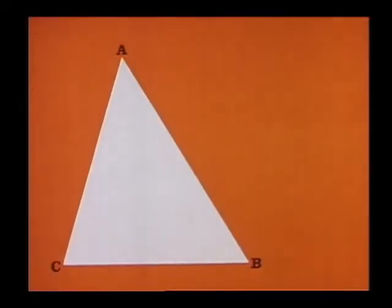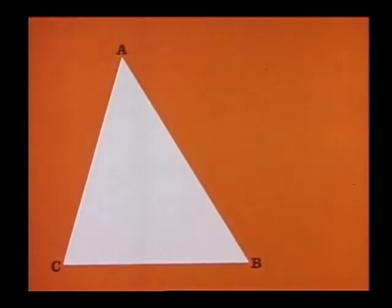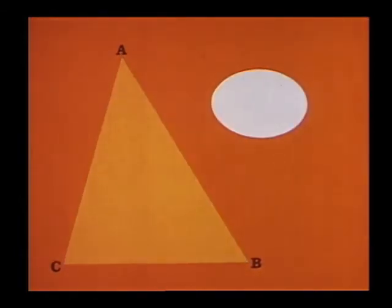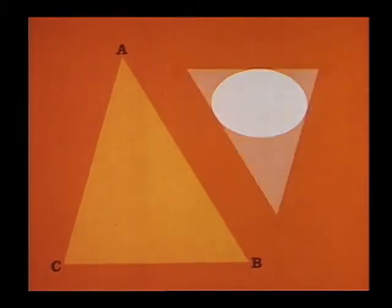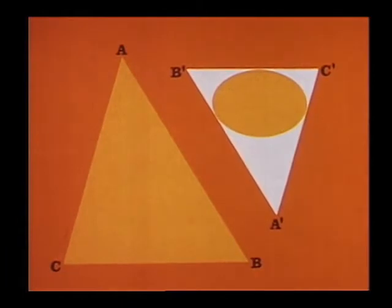We know how to inscribe a circle in a given triangle. How can we inscribe an ellipse? Let us begin by supposing that we do have an ellipse situated somewhere in the plane of the given triangle. We circumscribe a triangle A', B', C' about this given ellipse, with its sides respectively parallel to those of the given triangle A, B, C. This can be done in two distinct ways.